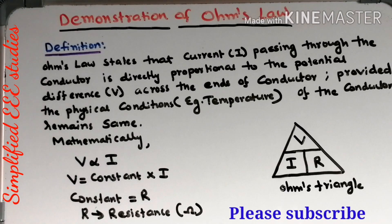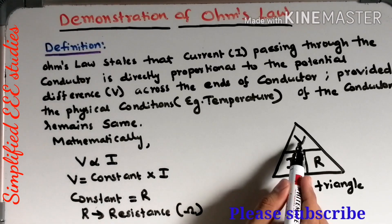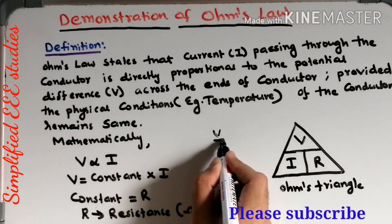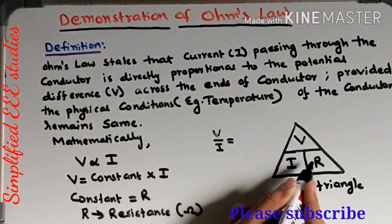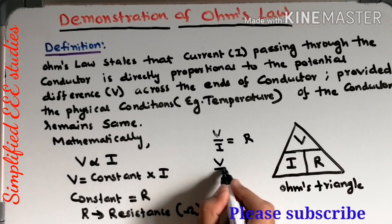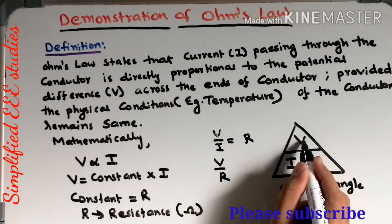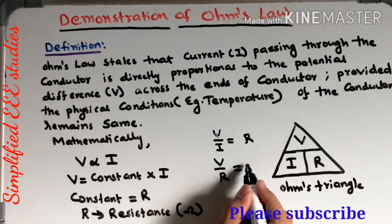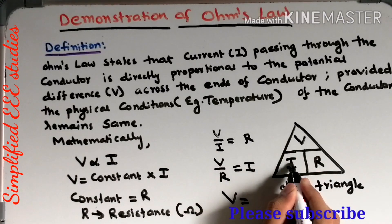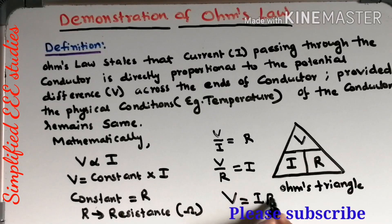Now how to take the ratio from the Ohm's triangle. Looking in the direction of V and I, we can take V by I, which gives V/I = R. In the same manner, looking at V by R, V/R = I. This triangle is really helpful to frame the equations. This is the basic idea about Ohm's law.